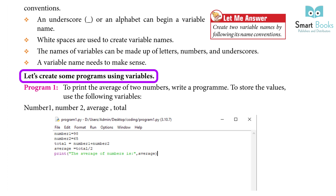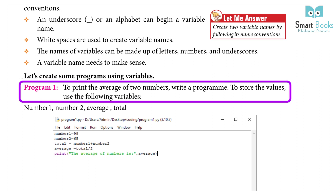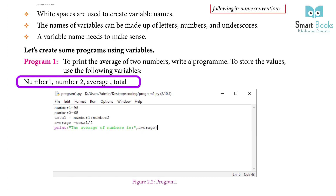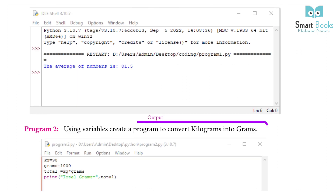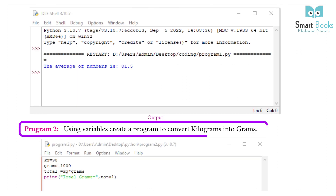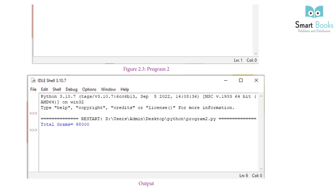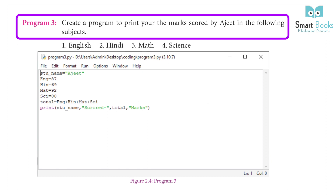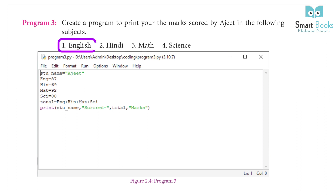Let's create some programs using variables. Program 1: Print the average of two numbers — write a program to store the values using variables number1, number2, average, and total. Program 2: Using variables, create a program to convert kilograms into grams. Program 3: Create a program to print the marks scored by a student in English, Hindi, Math, and Science.